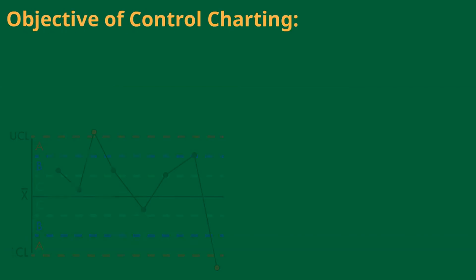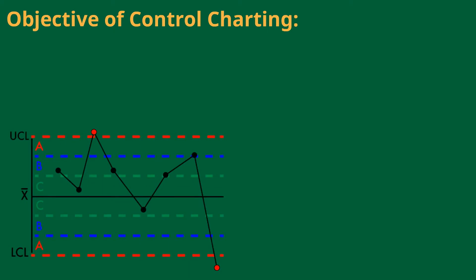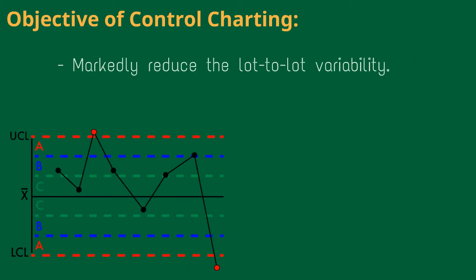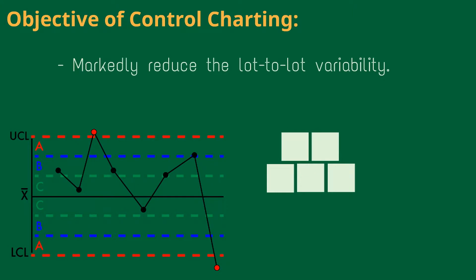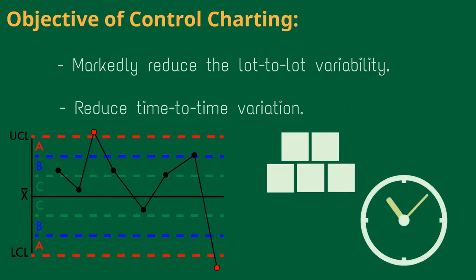The objective of control charting is to markedly reduce the lot-to-lot variability and reduce time-to-time variation.